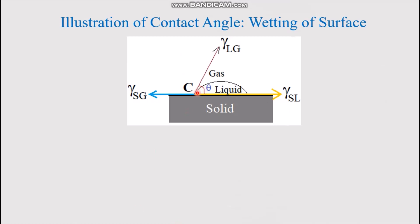At the contact point C, there are three force vectors due to surface tension. Along the solid-gas interface, there is tension γ_SG. Along the solid-liquid interface, there is tension γ_SL. And along the tangent to the liquid surface, there is the interfacial tension due to the liquid-gas interface, γ_LG.